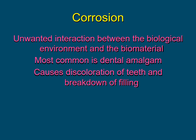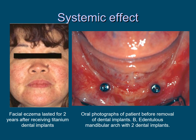Corrosion is the unwanted interaction between the biological environment and the biomaterial. Most commonly, it occurs in dental amalgam, causing discoloration of the teeth and marginal breakdown of the filling. Examples of systemic effects of corrosion are facial eczema due to titanium dental implants, shown in the image on the left, and inflammation and redness of the oral mucosa, shown in the image on the right.